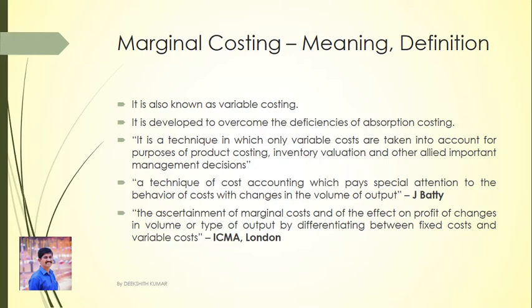Marginal costing excludes fixed manufacturing overhead from product costs. The principle of marginal costing is that fixed costs of manufacturing are period costs. Fixed costs attributed to a period must be written off in full against the contribution. Contribution is the excess of sales revenue over the total variable cost. Fixed cost is the period cost.